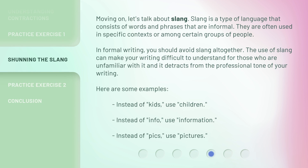Moving on, let us talk about slang. Slang is a type of language that consists of words and phrases that are informal. They are often used in specific contexts or among certain groups of people. In formal writing, you should avoid slang altogether. The use of slang can make your writing difficult to understand for those who are unfamiliar with it, and it detracts from the professional tone of your writing. Here are some examples: instead of 'kids', use 'children'; instead of 'info', use 'information'; instead of 'pics', use 'pictures'.